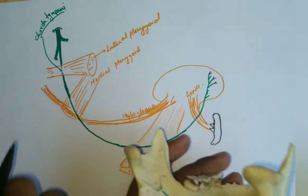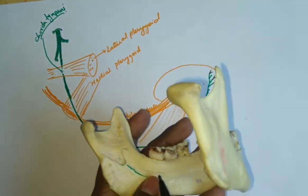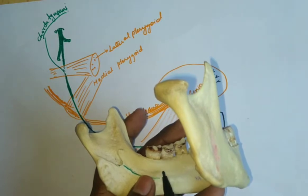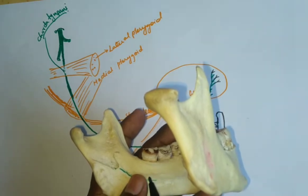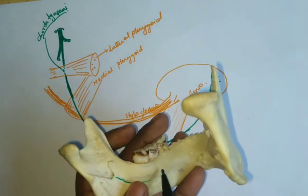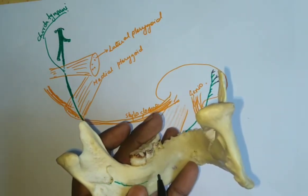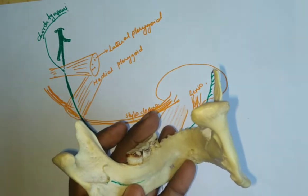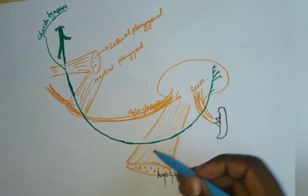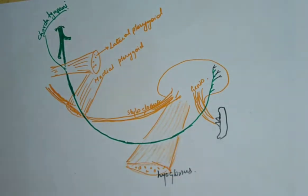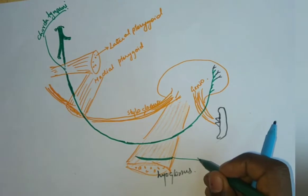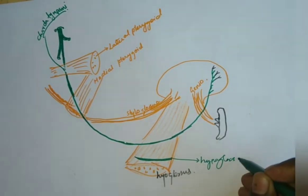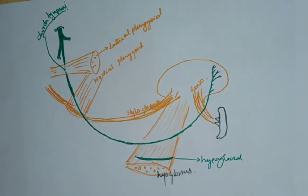On its course, after crossing the medial pterygoid, it is found in the floor of the mouth, in relation to the third molar tooth — just at the base of the third molar tooth, deep to the mucosa. From here it passes medially to enter inside the tongue. At the hyoglossus, this nerve is related inferiorly to the hypoglossal nerve.